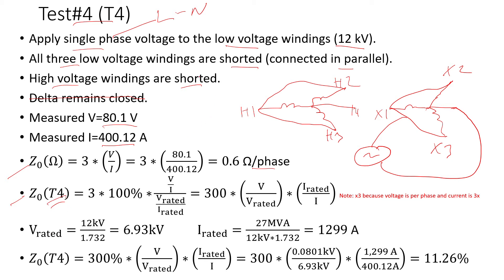Since I'm applying voltage to the low voltage winding which is 12 kV, that's why I'm using 12 kV to calculate the rated current. This is just square root of 3 because I have to calculate the line to neutral. Here's the rated current.